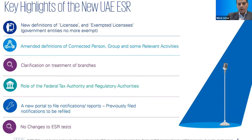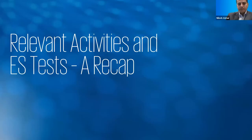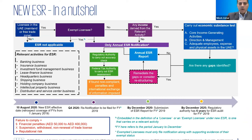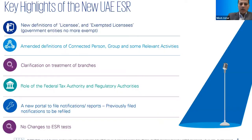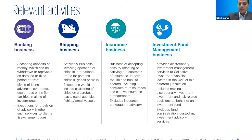To recap: what are the relevant activities? You are in scope of the regulations only if you carry on one of these nine relevant activities. These are: distribution and service centers, holding companies, IP business, lease finance business, headquarter businesses, shipping, banking, insurance, and investment management. There is no change to the definition per se, but there are certain changes to the definitions of groups and connected person which do bring in some definition changes.